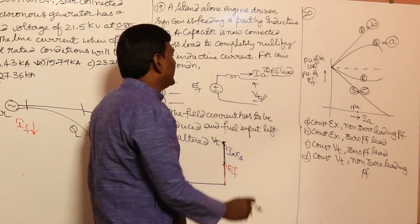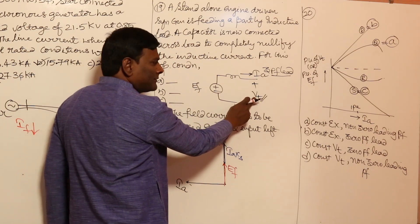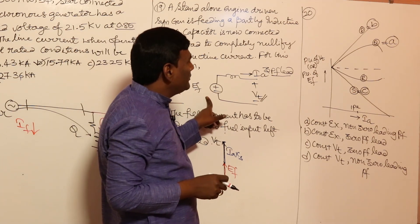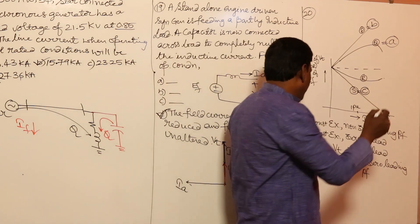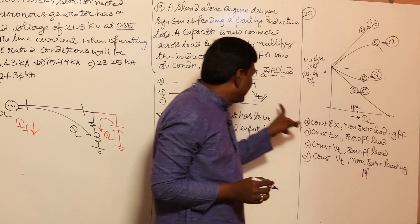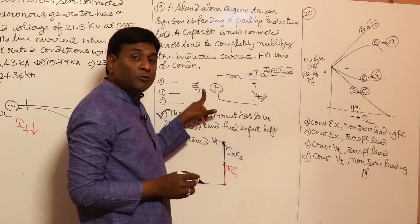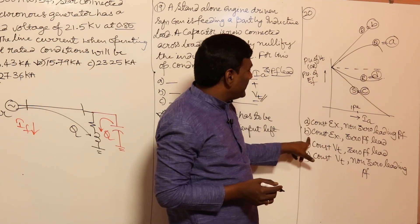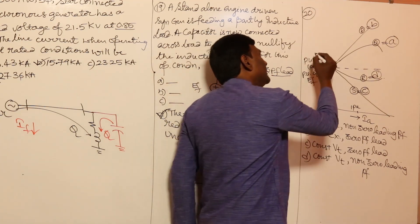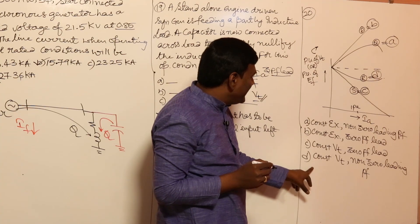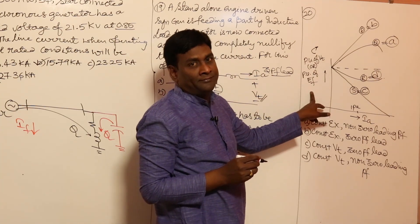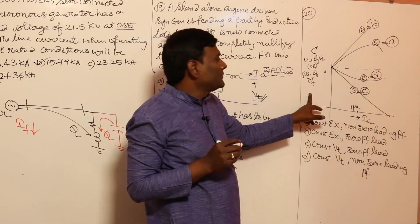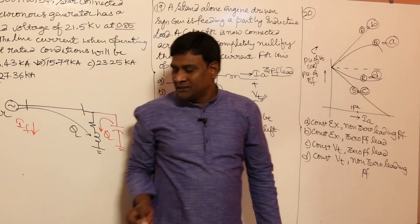Fourth case: constant Vt, non-zero leading. Leading power factor means Ef should be less than Vt (negative voltage regulation), and since it is not ZPF, the characteristic is non-linear — so this corresponds to graph D. For cases A and B, the y-axis represents per-unit terminal voltage; for cases C and D, the y-axis represents per-unit Ef. In upcoming sessions, we will solve more problems.